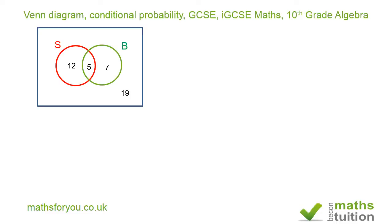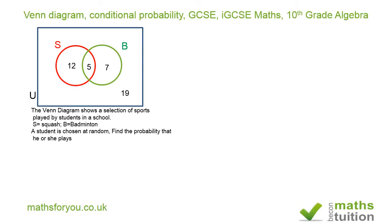We have a universal set containing 43 students in total — you get that by adding 12, 5, 7, and 19. The Venn diagram shows a selection of sports played by students in a school: S for squash and B for badminton.